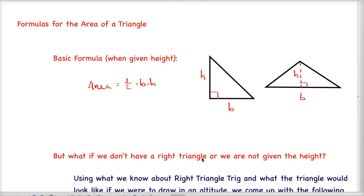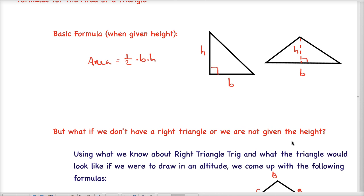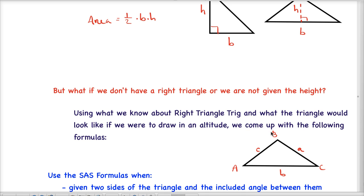But what if we don't have a right triangle or we're not given the height if we have an oblique triangle? So what we're going to do is we'll use what we know about right triangle trigonometry and we could come up with these different formulas.